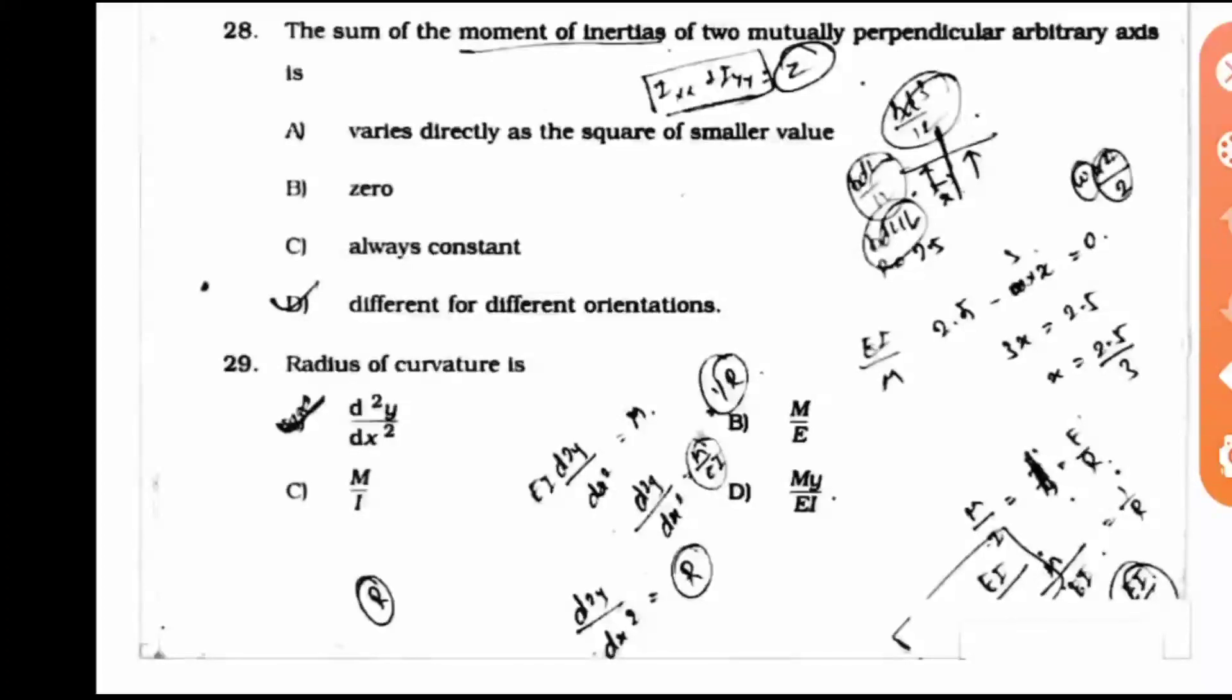Question 29: The radius of curvature is d square y by dx square. Option A.